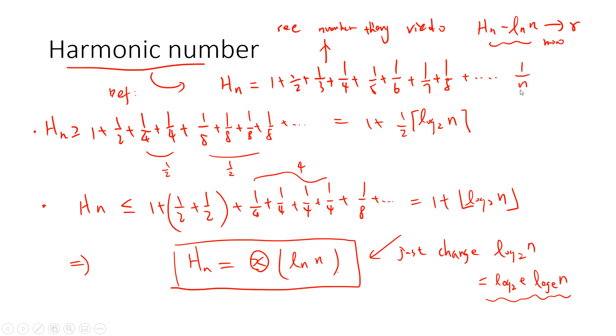So this H_n is defined to be 1 plus 1/2 plus 1/3, 1/4, 1/5, up to 1/n. So the first way is very easy. We just first see a lower bound.